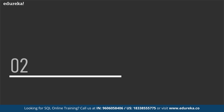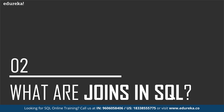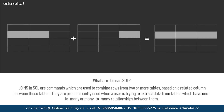So let's get into the next topic — what are SQL joins? Joins in SQL are commands which are used to combine rows from two or more tables based on a related column between those tables. Joins are predominantly used when a user is trying to extract data from tables which have one-to-many or many-to-many relationships between them.